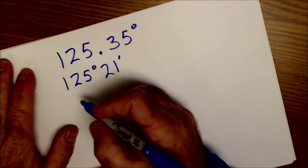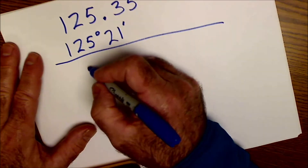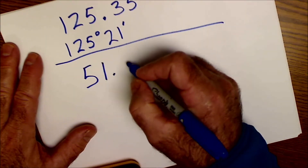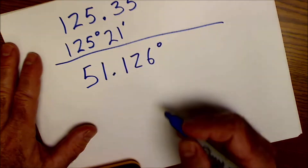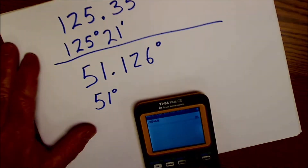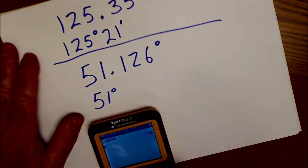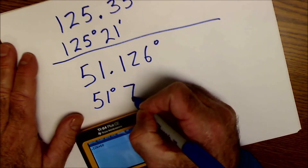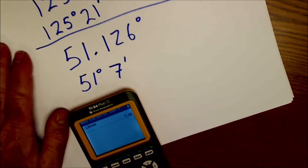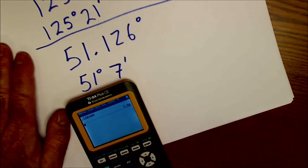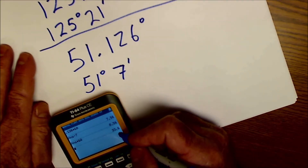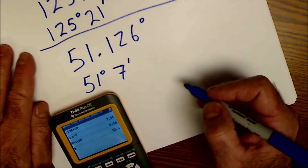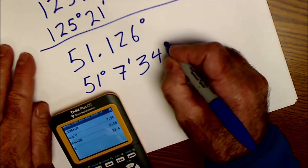Let's do another one. Let's say I have 51.126 degrees. It's going to be 51 degrees. I take that 0.126, multiply by 60, and get 7.56. So that's 7.56 minutes. Storing all the significant digits, I subtract 7, leaving 0.56, and multiply that by 60 to get 33.6 seconds — I'll round up to 34 seconds.